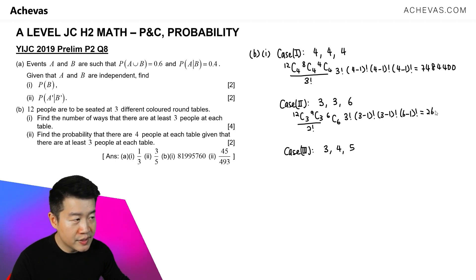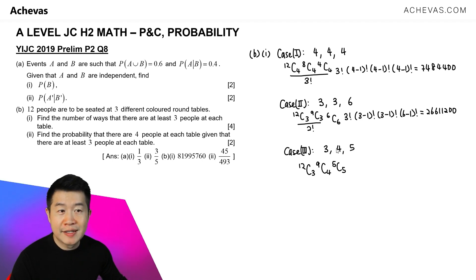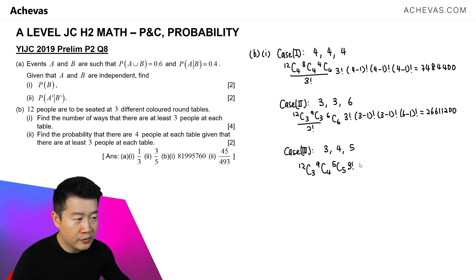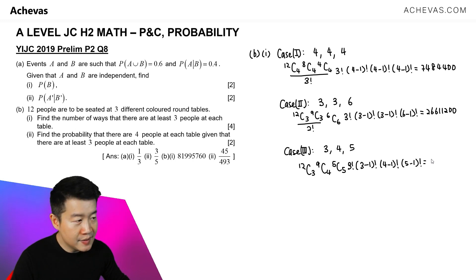Case 2 gives us 26,611,200. For Case 3, out of 12 people we choose 3, then out of the 9 remaining we choose 4, and the last 5 are chosen with 5 choose 5. Since all group sizes are distinct, no division by factorial is needed. We assign the 3 groups to the 3 colored tables by multiplying by 3 factorial. The circular permutations are (3−1)! for the table of 3, (4−1)! for the table of 4, and (5−1)! for the table of 5. This equals 47,900,160.